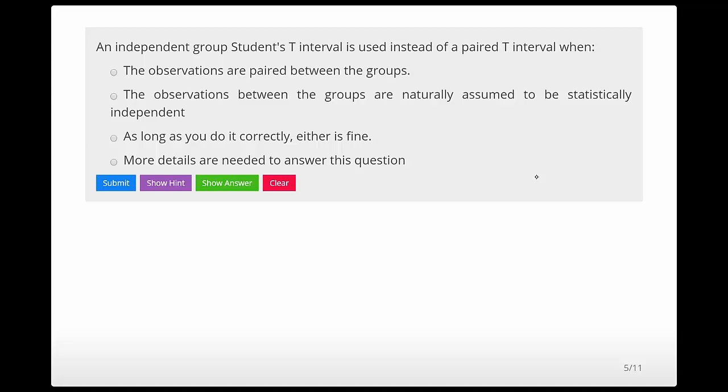So probably the most common mistake is to treat paired data as if it's independent. And the most common consequence of doing that, it depends a little bit on the circumstance, but the most common consequence is that variability that's explained by the pairing has been left in the interval and you're getting an interval that tends to be wider than what you would expect to get otherwise.